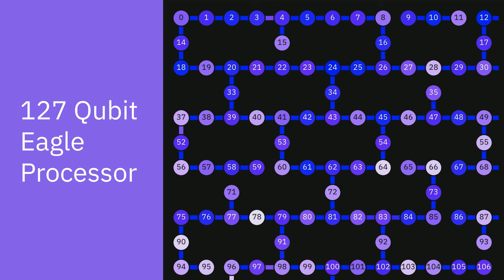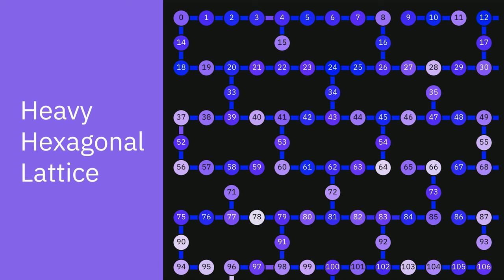In November of 2021, IBM released the 127 qubit Eagle processor, which we have a picture of here. And this is arranged in something we call a heavy hexagonal lattice. In today's video, I'd like to tell you why we arranged our qubits in something called a heavy hex lattice and what it means for quantum error correction.